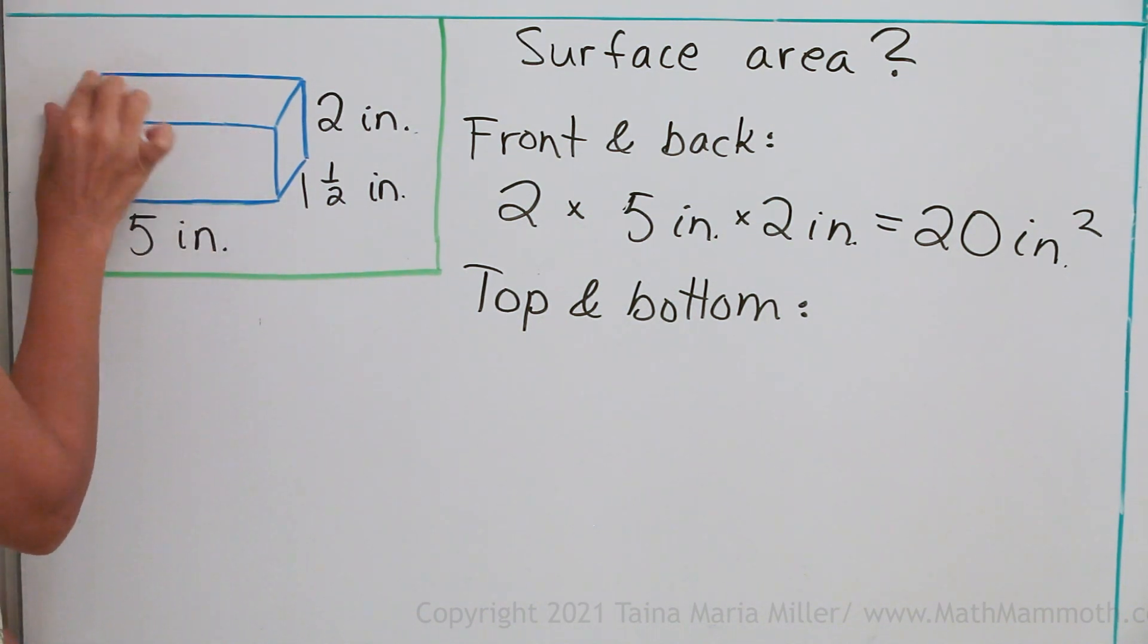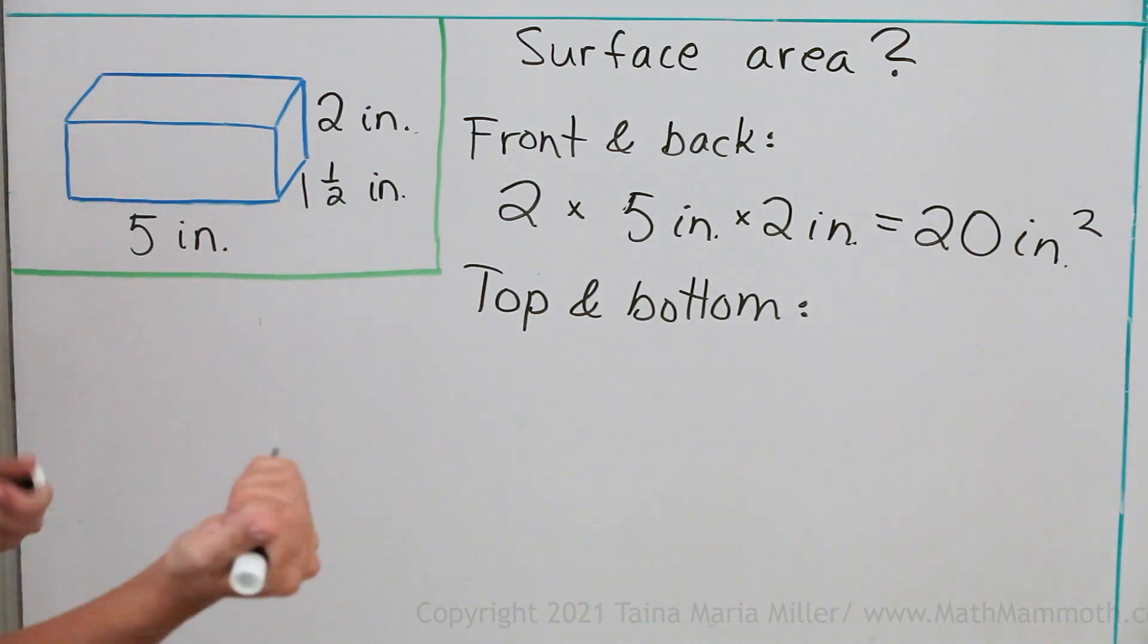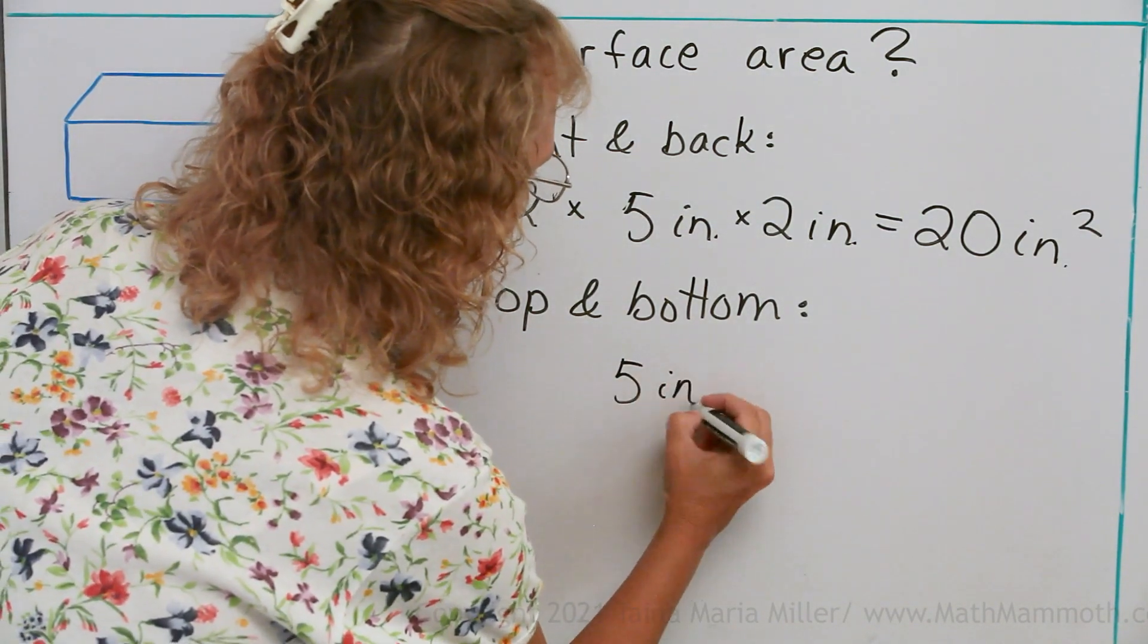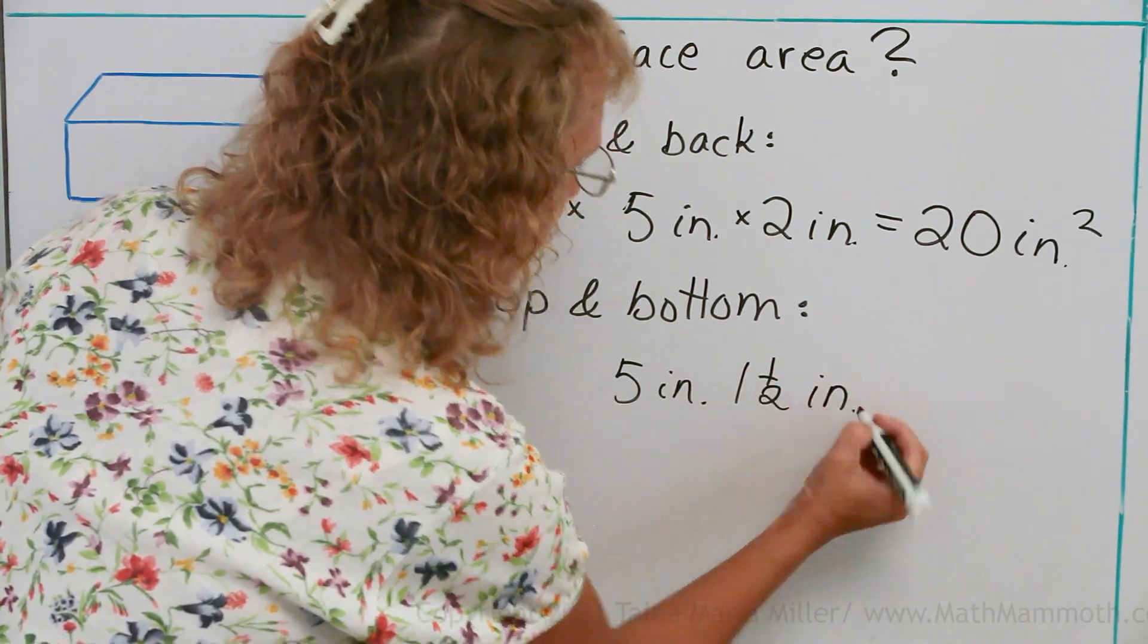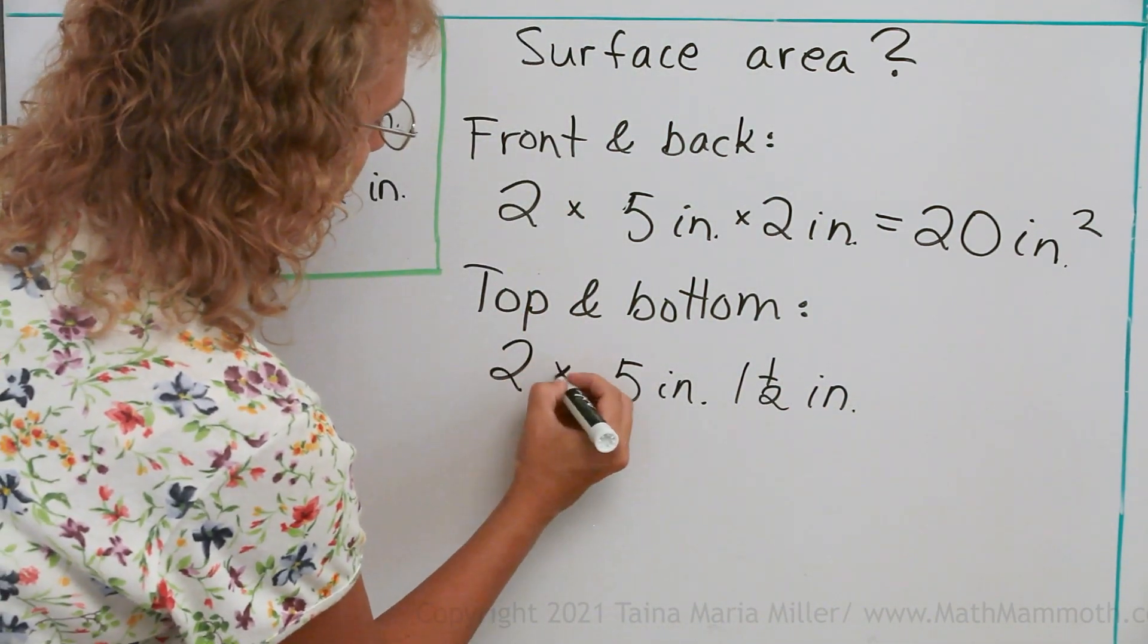So one of them would be 5 inches times 1.5. But there's two of them, top and bottom, so we multiply the whole thing times 2.